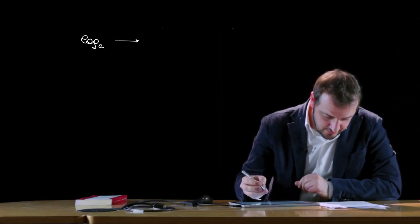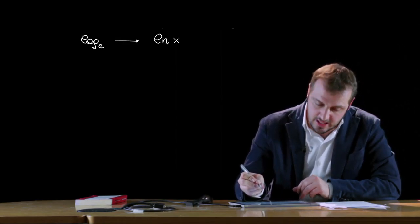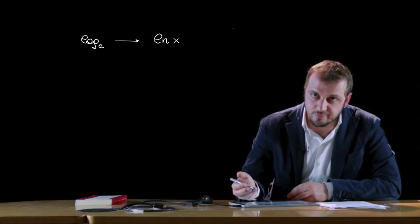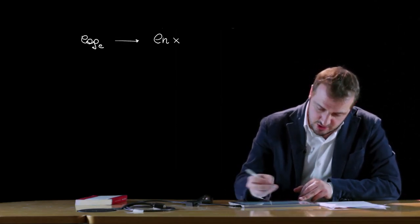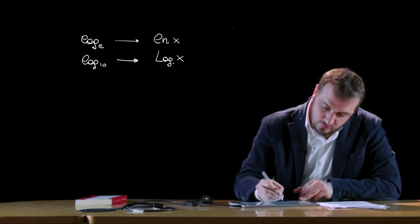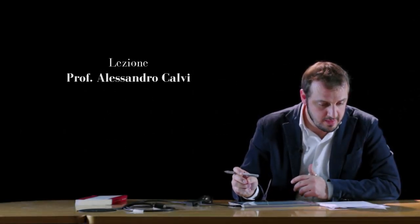Infine, due logaritmi particolari: i logaritmi naturali o neperiani, caratterizzati dalla base e (numero di Nepero, irrazionale, circa 2,718...), vengono indicati con la dicitura ln(x). Il logaritmo decimale o volgare, detto anche logaritmo di Briggs, ha base 10 e viene convenzionalmente scritto come log(x), utilizzando la lettera L maiuscola.